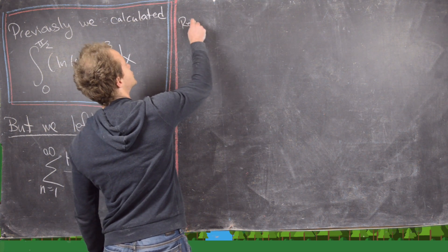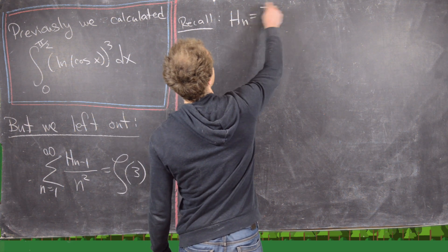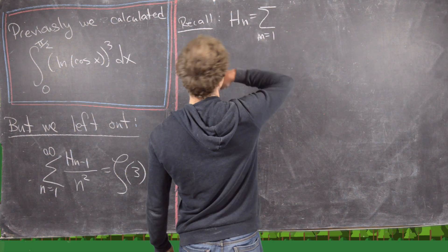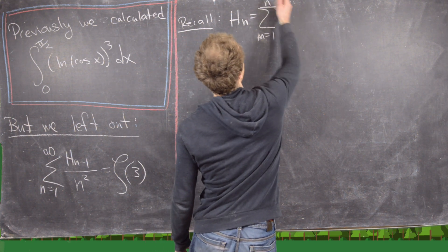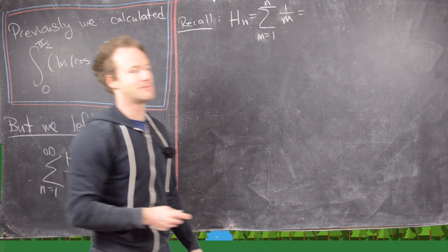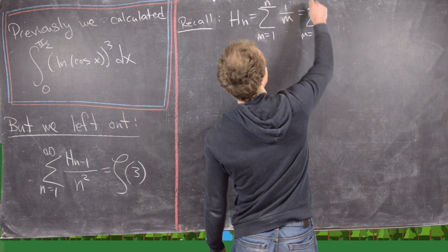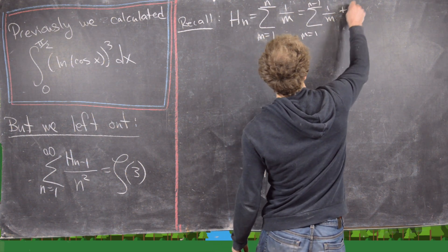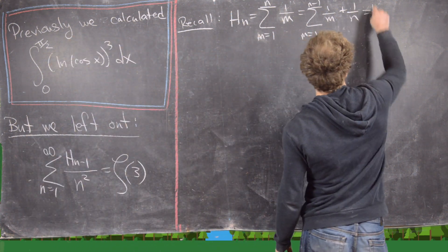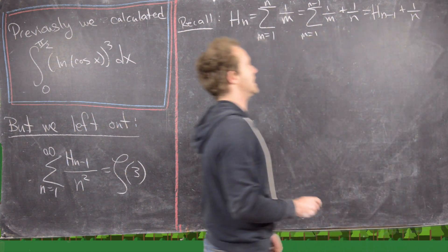Let's first recall that the nth harmonic number is given by the sum m=1 to n of 1/m. Notice I can take out the first n−1 terms from this sum, giving the sum m=1 to n−1 of 1/m, plus the nth term. That gives us a nice recursion: H_{n−1} + 1/n.